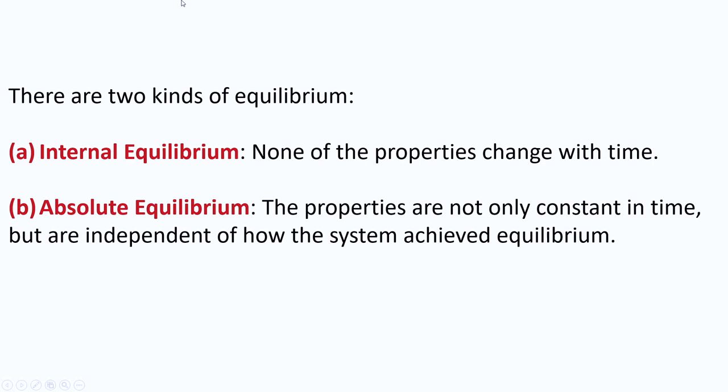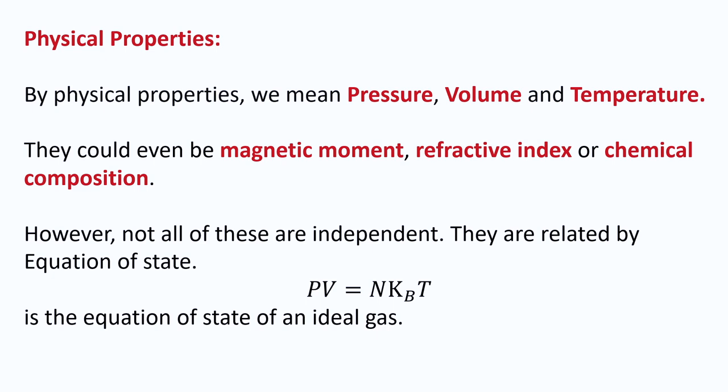Physical properties include pressure, volume, temperature, chemical composition, and also magnetic moment, refractive index, and so on. Not all of these are independent — they are connected by what is called the equation of state. An important example, which we will see many times during this course, is the equation of state for an ideal gas: PV = NkT, where P is pressure, V is volume, T is temperature, k_B is the Boltzmann constant, and N is related to the number of molecules.